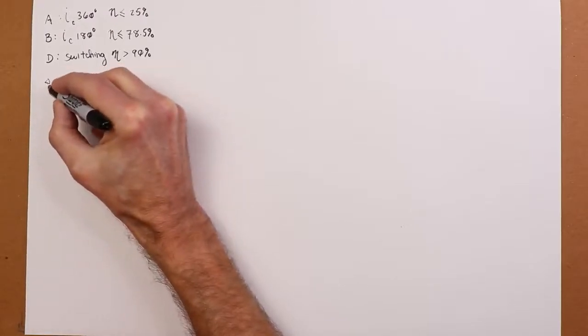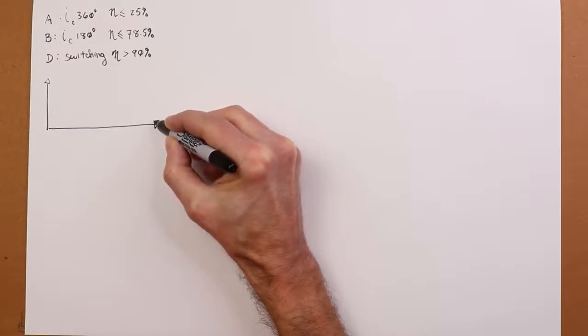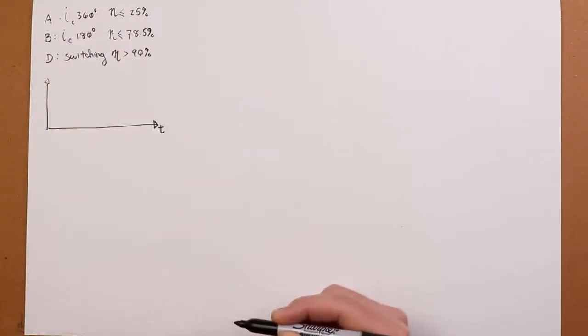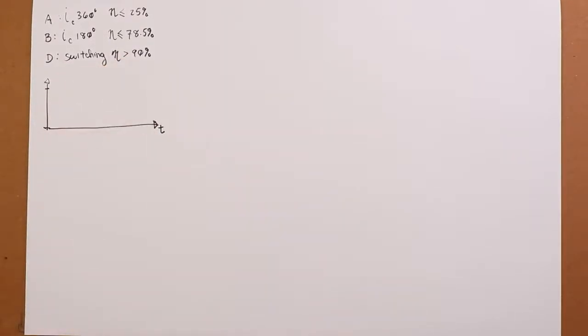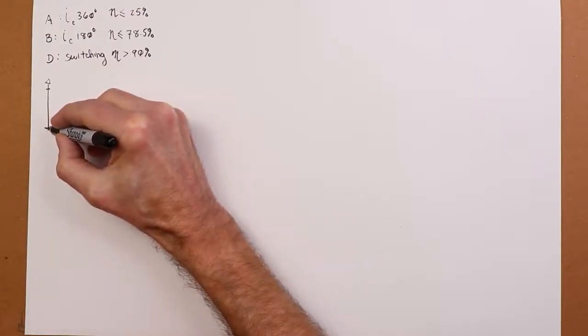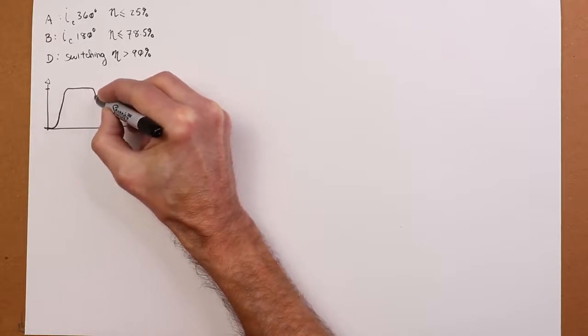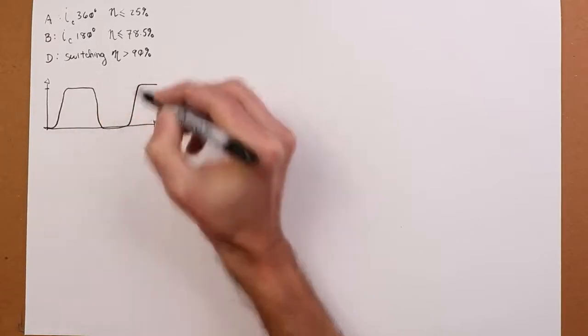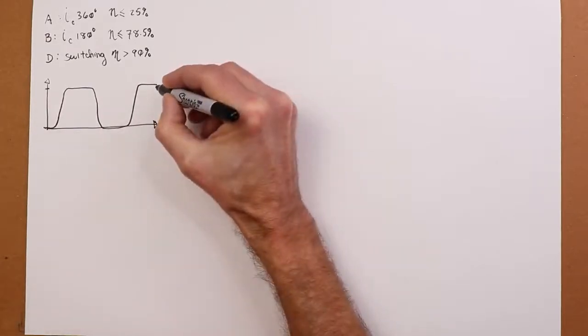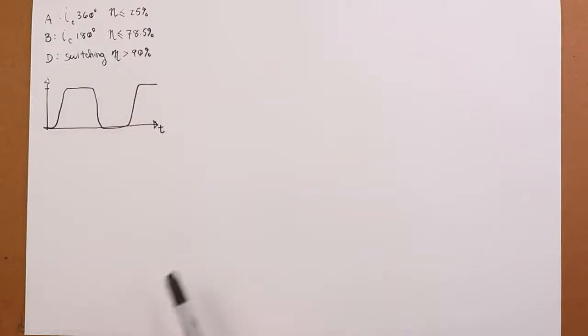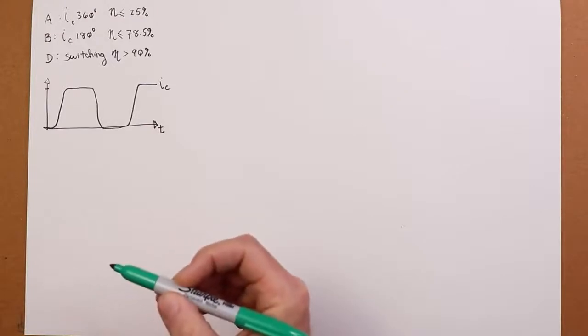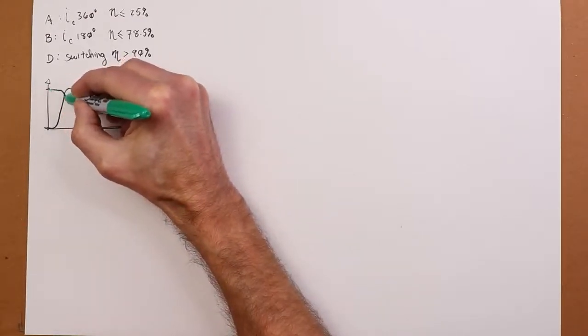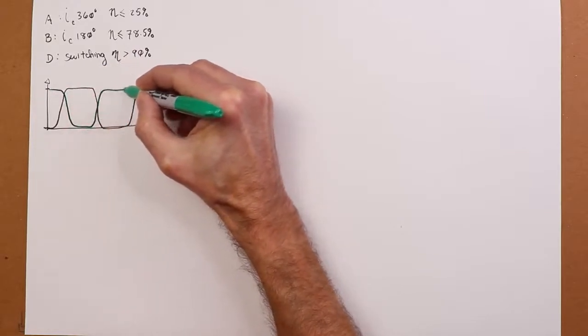So when you're in saturation, yes, there's a huge current, but the collector emitter voltage is very small, maybe a tenth or two of a volt. When you're in cutoff, the voltage is huge, but the current is essentially zero. So the product of those two things is really small. This can be seen if we just do a little plot over here. Here's time, and on this axis will be the current and the voltage.